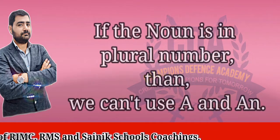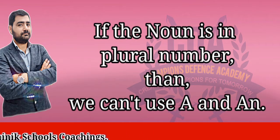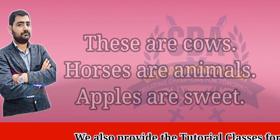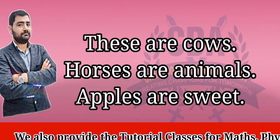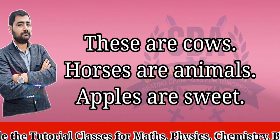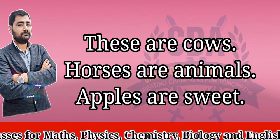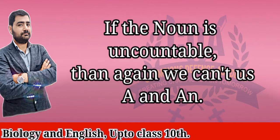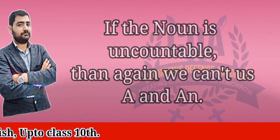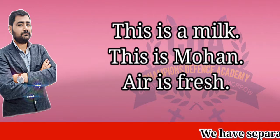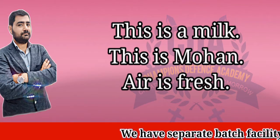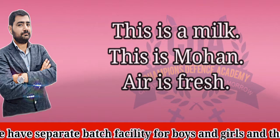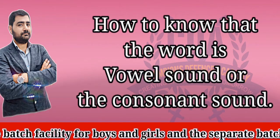If a noun is plural, we do not use 'a' or 'an'. For example: these are cows, horses are animals, apples are sweet. Also, if a noun is uncountable, we do not use 'a' or 'an'. For example: this is milk, air is fresh. These nouns are uncountable, so we don't use 'a' or 'an' with them.